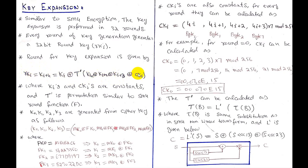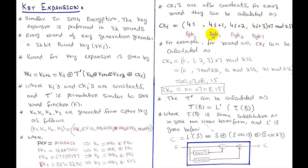Now how is ck of i calculated? Each ck of i is a 32-bit word divided into four bytes. The formula is: byte j of ck[i] equals (4i + j) × 7 mod 256, where j is 0, 1, 2, or 3. For example, for i=0: the four byte values are 0×7=0, 1×7=7, 2×7=14, and 3×7=21 mod 256 - which stay 0, 7, 14, 21. Converting these decimal values to hexadecimal and concatenating gives ck[0].